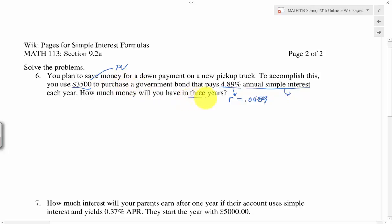And then how much money will you have in three years? That's going to be t equals 3. But then how much money will you have? That's another keyword that's telling me. This says simple interest formula. And then this one tells me the future value.